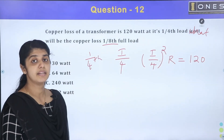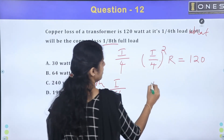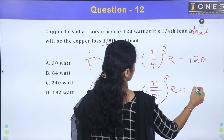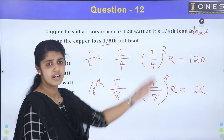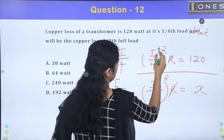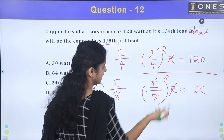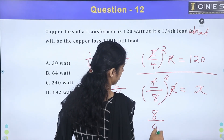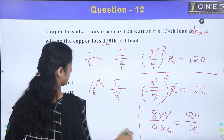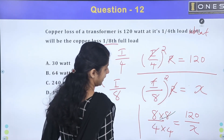At one-eighth full load, the copper loss is (I/8) squared times R, call it x. Dividing the two equations, R and I cancel. We get the ratio: (1/8) squared over (1/4) squared, which is 8 squared over 4 squared, equal to 120 over x.